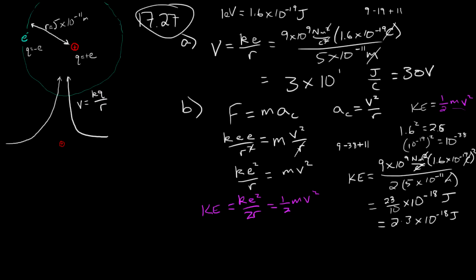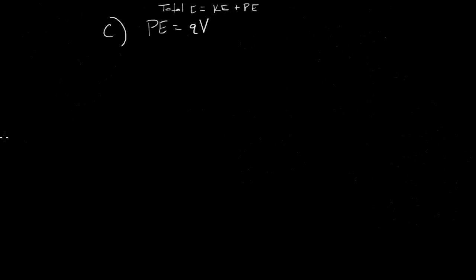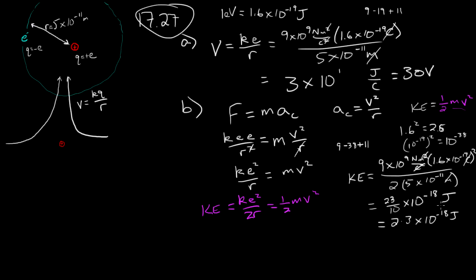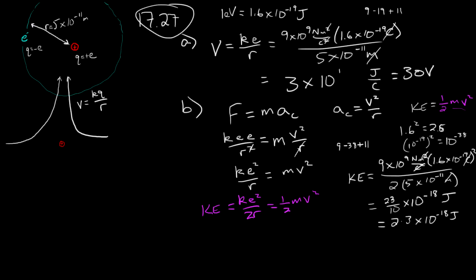So the potential energy is the charge on the electron times the voltage. And from part A, we know that the voltage is 30 volts. So the potential energy is E times 30 volts. Which equals 30 electron volts. Okay, the kinetic energy we just found. Unfortunately, it's in joules. Let's convert it to electron volts. So it's 2.3 times 10 to the minus 18 joules. And if we divide that by 1.6 times 10 to the minus 19 joules per electron volt. So I'm just bringing the electron volt up at the top. The joules will cancel. And I'll get my answer in electron volts.